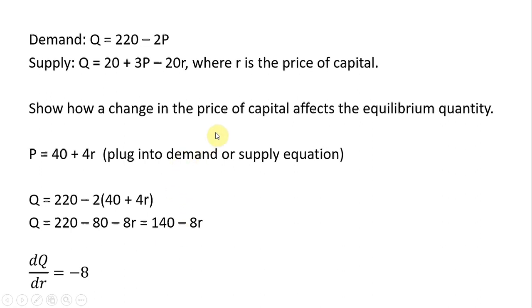To figure out how the price of capital affects equilibrium quantity, take the derivative of the demand equation, which will be the equilibrium quantity here, expressed in terms of r. Take the derivative of Q with respect to r, and we get minus 8. So if the price of capital increases by $1, the equilibrium quantity will fall by 8.